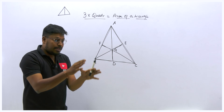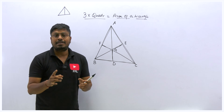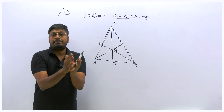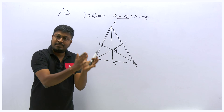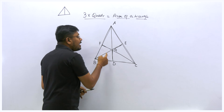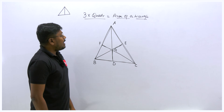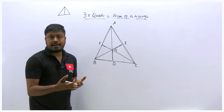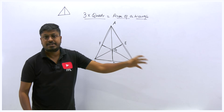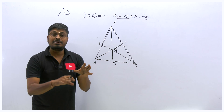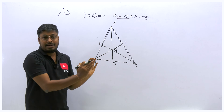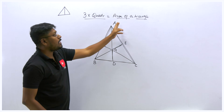So whenever you draw a median, remember: it makes the triangle divide into two equal halves. When you draw three medians, all the parts are divided into equal areas. When you refer to any foreign author books, they will write 1, 1, 1, 1, 1, 1 for each part — because they are assuming all six areas are the same. So three into quadrilateral area equals area of a triangle.